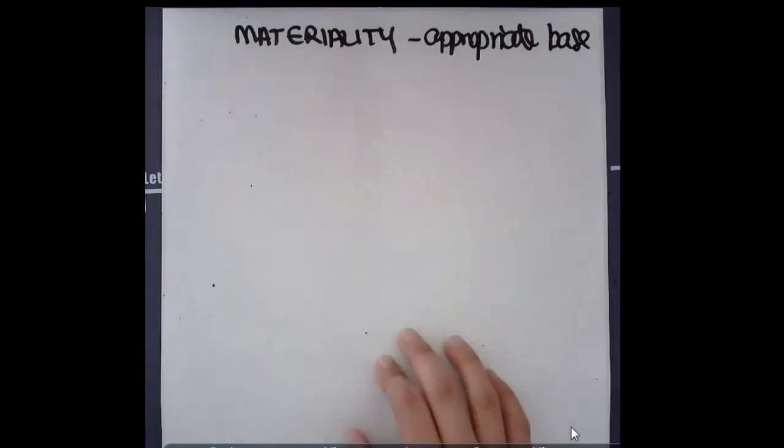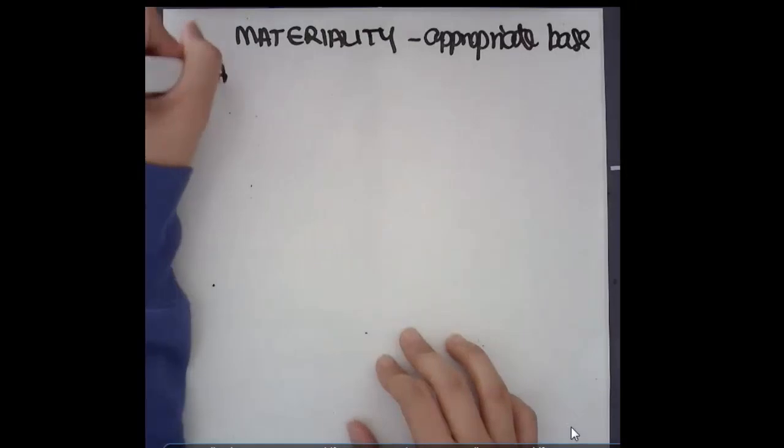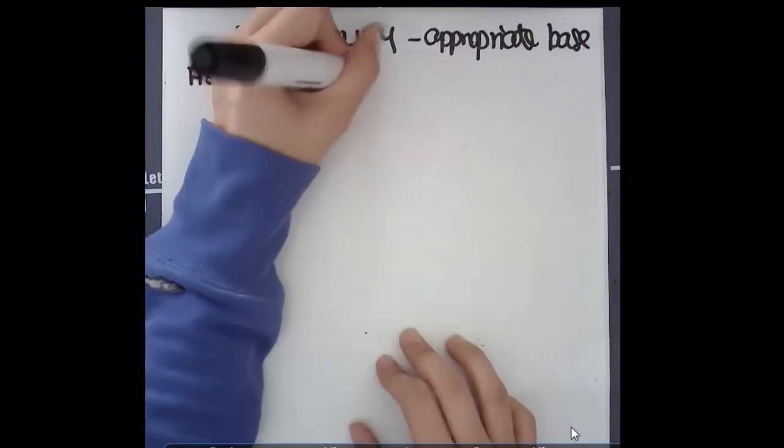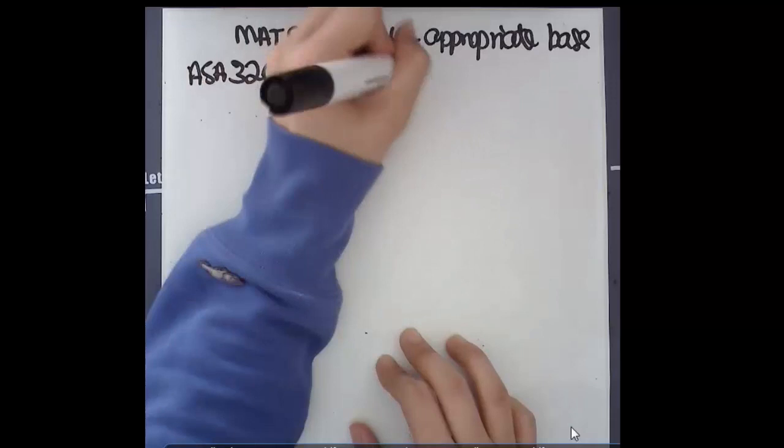Let's start with the relevant auditing standard. ASA 320 says that we need to consider materiality in the planning of the audit and in the performance of audit procedures.